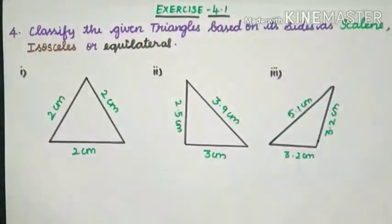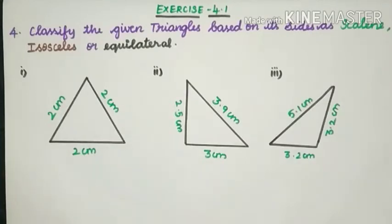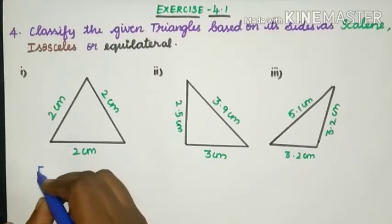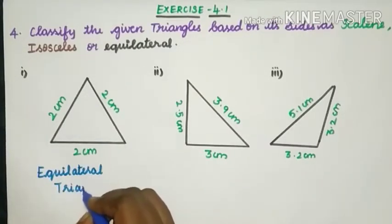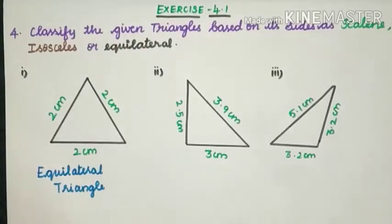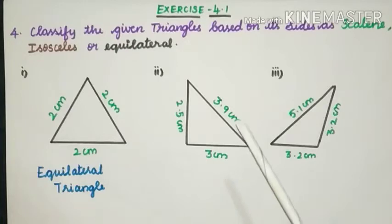First: here all the sides are equal — 2 cm, 2 cm and 2 cm. All three sides are equal, so it is called an Equilateral triangle. Second: the sides of the triangle are 2.5 cm, 3.9 cm and 3 cm. All three sides are different in length, so it is called a Scalene triangle.